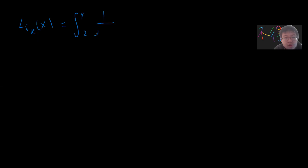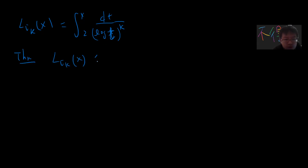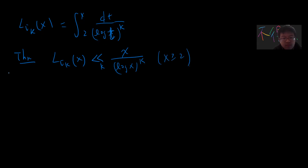Let me quickly introduce: L_k(x) is a generalization defined as the integral from 2 to x of t^k / log(t) dt. Our goal is to find its asymptotics when x is large. The theorem states that L_k(x) is less than or equal to — using Vinogradov notation — x / log(x)^k.